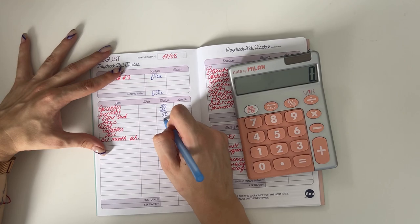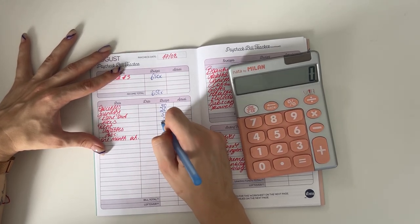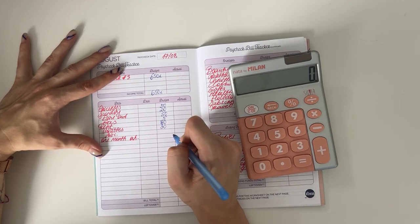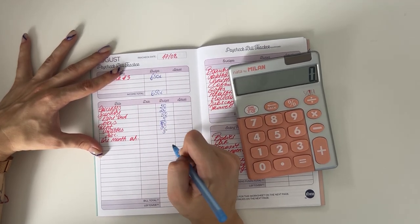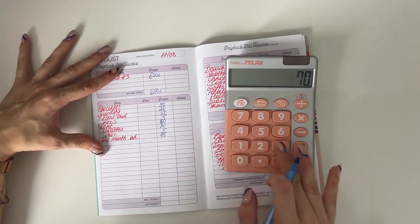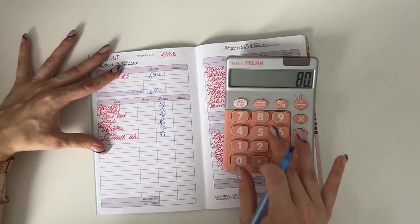€50 is going into groceries, €20 in spending, and €50 in dine out. We're adding €5 to gas, €80 in rent, and €30 in utilities. I will also add €5 into miscellaneous and €75 into one month ahead.